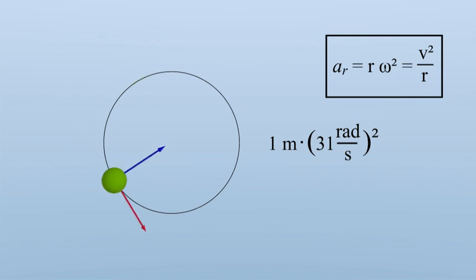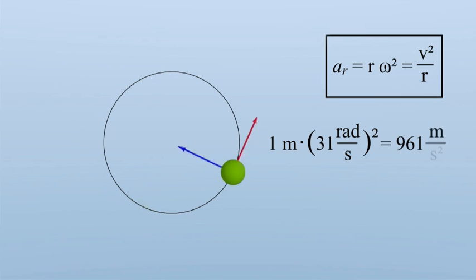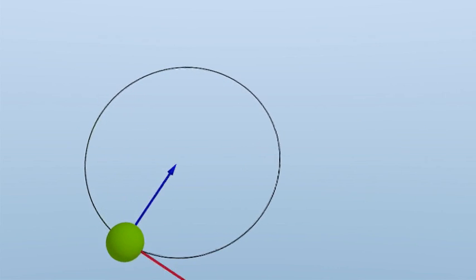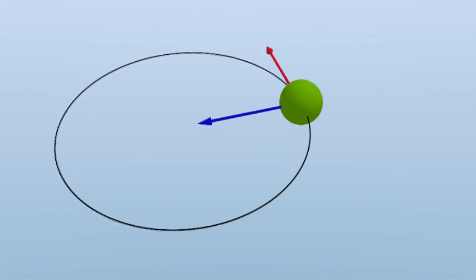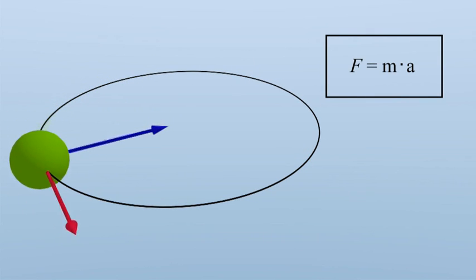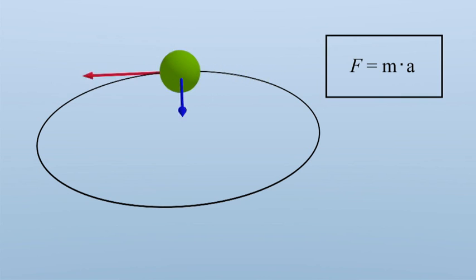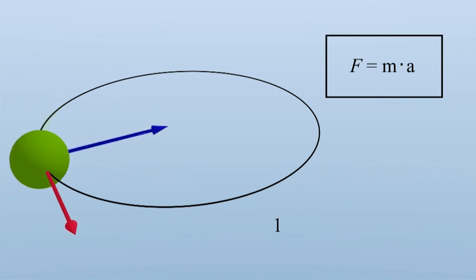In our case, that's 961 meters per second squared. So what about the forces acting? Forces are calculated by multiplying the object's mass with its acceleration, and have the unit Newton. Let's say our object has a mass of 1 kilogram.